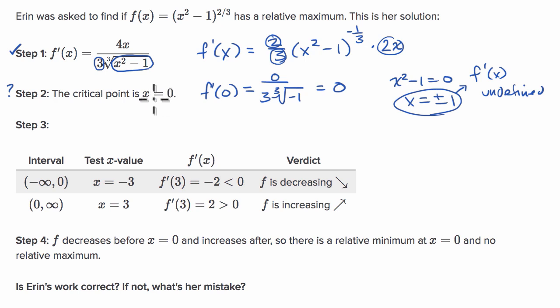But you have to make sure that when you test on either side that you're not going beyond another critical point, because critical points are places where you can change direction. And so let's see what she does in step three right over here.